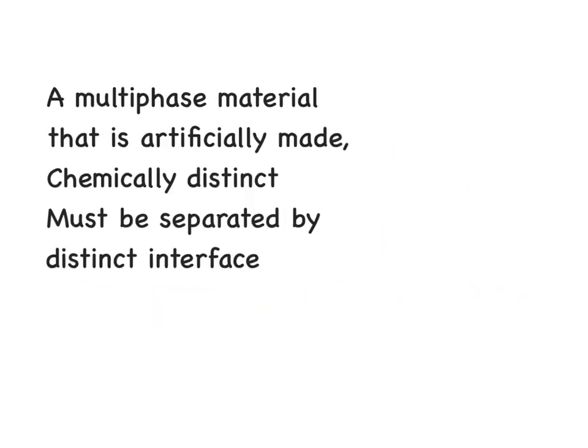When it comes to industries, structural composites that are very widely used can be defined as any multi-phase material that is artificially made, where the different phases are chemically distinct and these two distinct phases should be separated by a distinct interface.